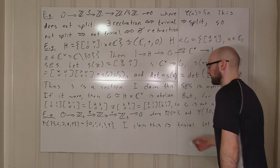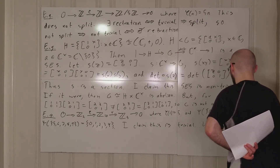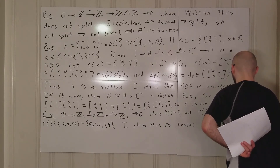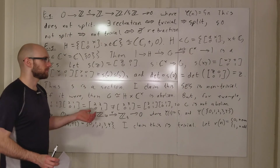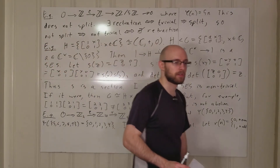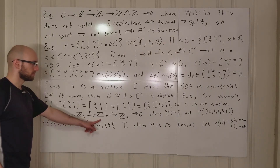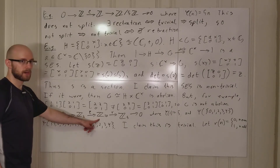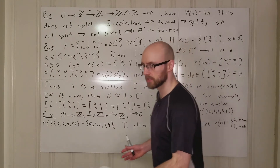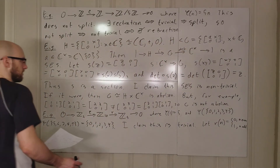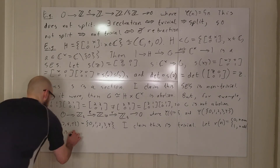Define r(n) = 0 if n is even, and 1 if n is odd. This sends {0,2,4,6,8} to 0 and {1,3,5,7,9} to 1. If you start at 0 in Z₂, phi takes it to 0, and r takes it back to 0. If you start at 1, phi takes it to 5, which is odd, and r takes it back to 1. You can check this is a homomorphism, so r is a retraction.